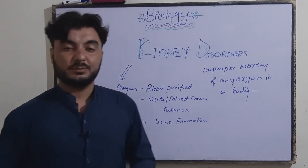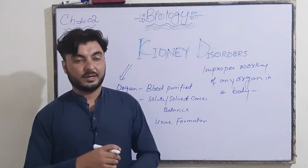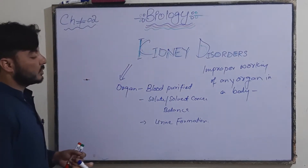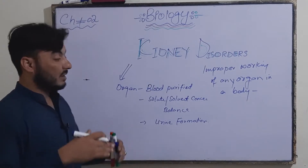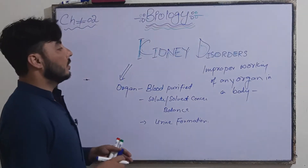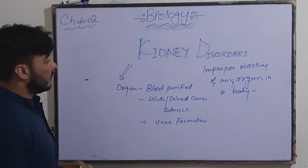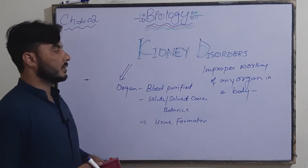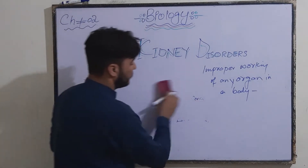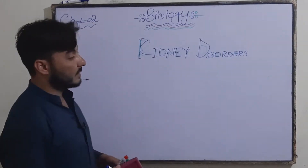If there is a change in the body from normal condition — whether in blood purification, solutes and solvents concentration, or any other condition — and an abnormal or lower condition results, we call this a kidney disorder. The main disorders are of two types: kidney stones and renal failure.